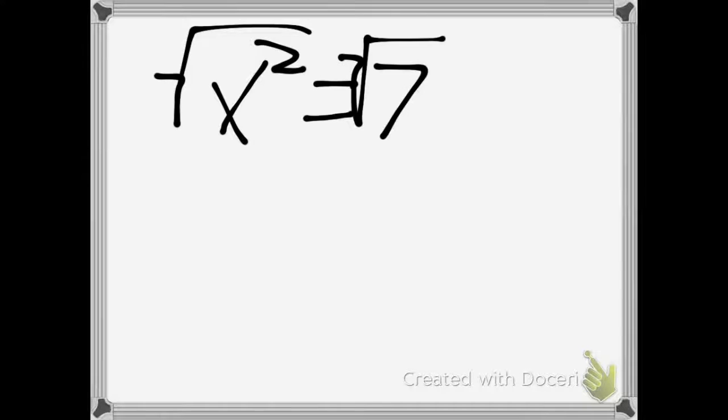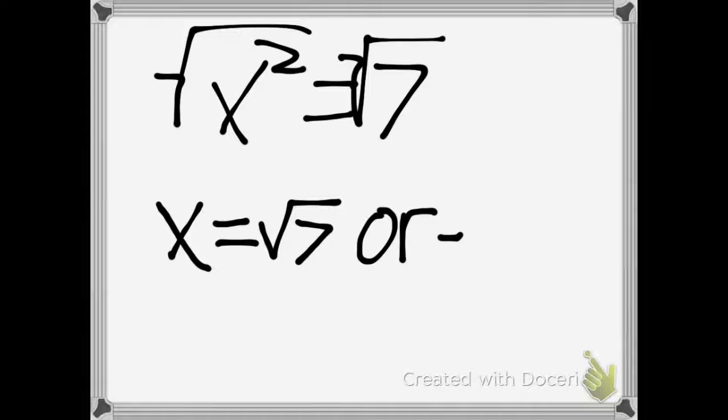So now we find the square root of both sides, and that gives us x equals the square root of 7 or the negative square root of 7. And this has been the square root method.